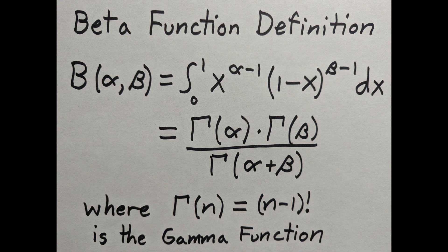It also is stated to be equal to the gamma function, gamma of alpha, gamma of beta over gamma of alpha plus beta. Gamma of n is n minus 1 factorial when n is an integer.